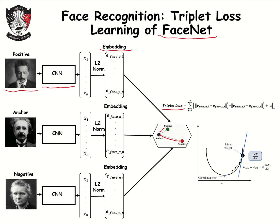Referring to the architecture given here, we can see that we have three input images. The first one is called the anchor, the second one is called positive, which belongs to the same identity as the anchor, and the third one is called negative, which belongs to a different identity.